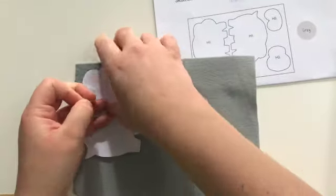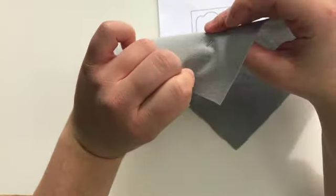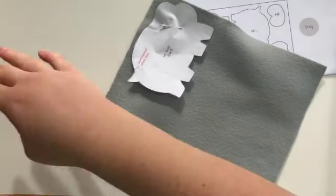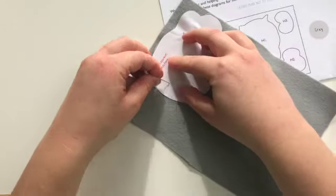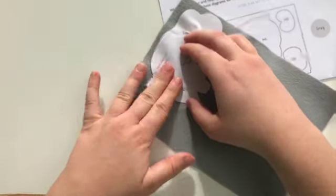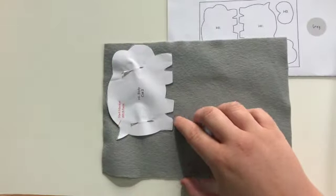Just pin through both layers of felt and your template to secure in place. Make sure it's nice and flat as you do it. It's probably best to just cut one piece at a time.